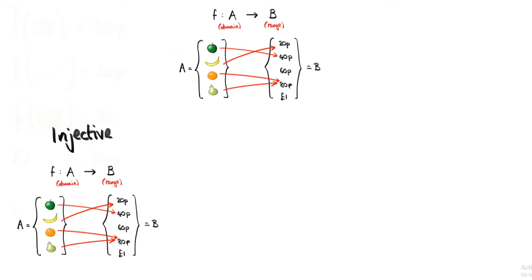We only need to make a slight change to make our original function an injective function. That's by, say, changing the value of f of orange from 80p to 60p. But by making this change, we've changed what the function is actually doing, and so we should give the function a different name. Let's call the function g.